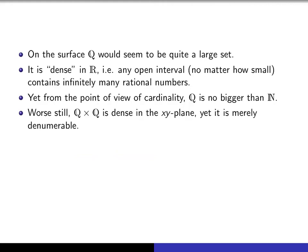But if you go up one dimension and you look at Q cross Q, remember we proved that the product of any two denumerable sets is denumerable. So this is now denumerable.